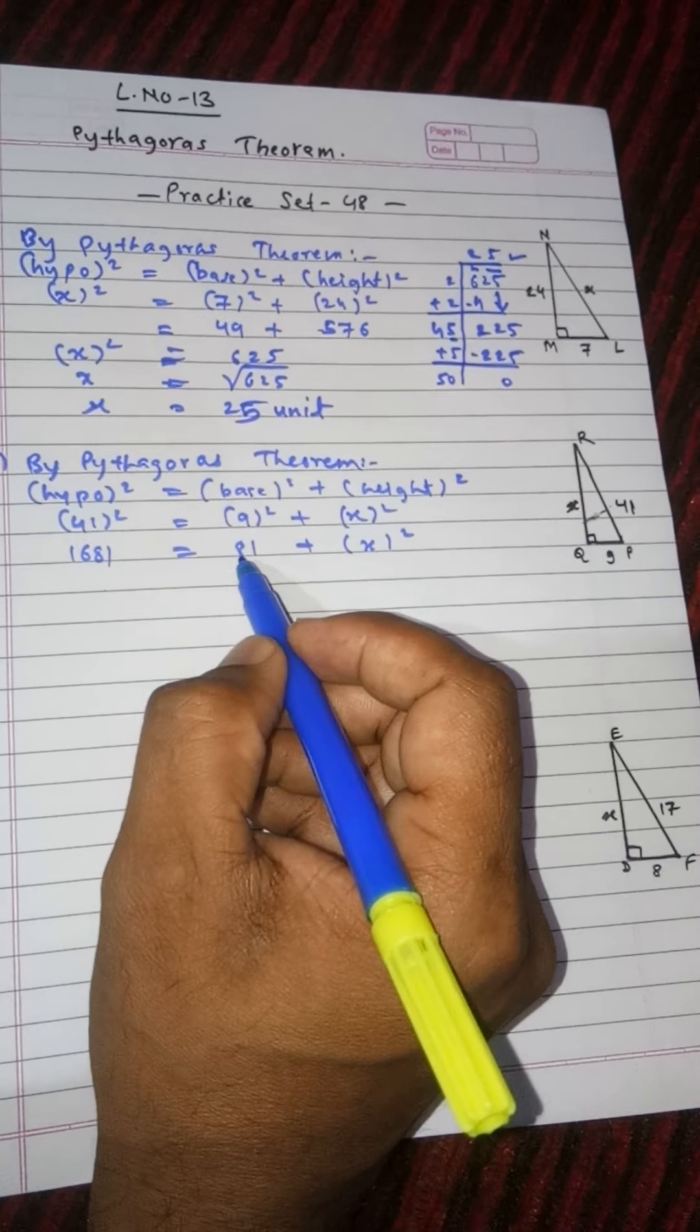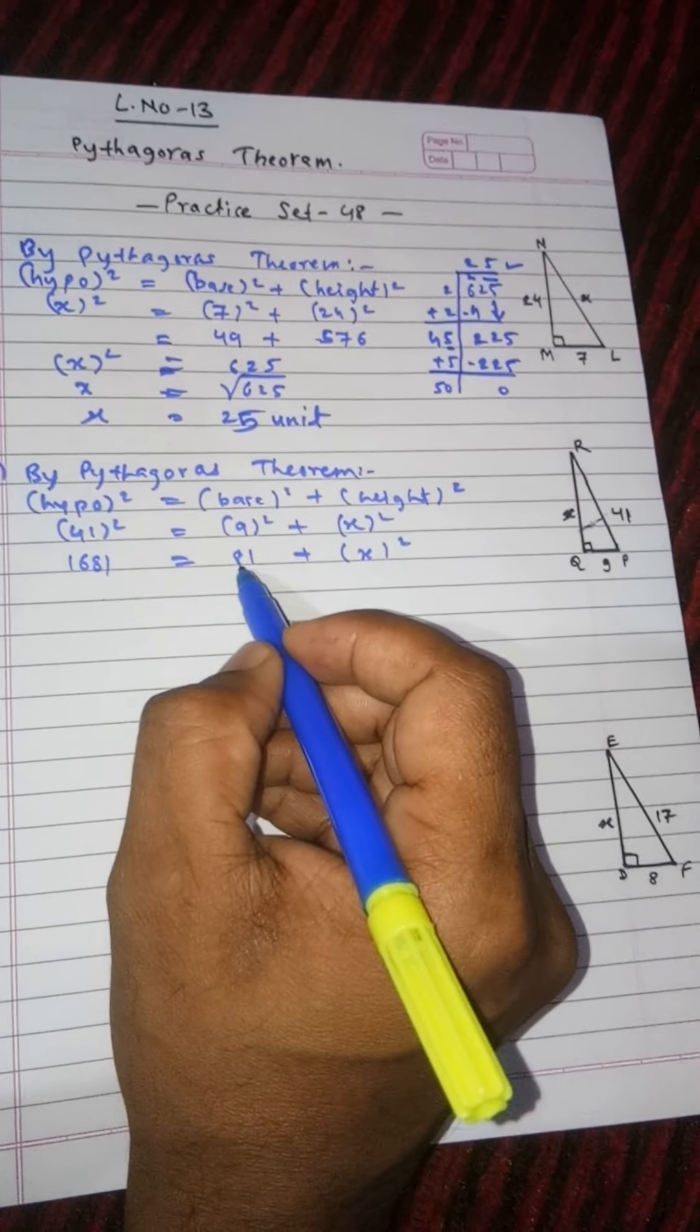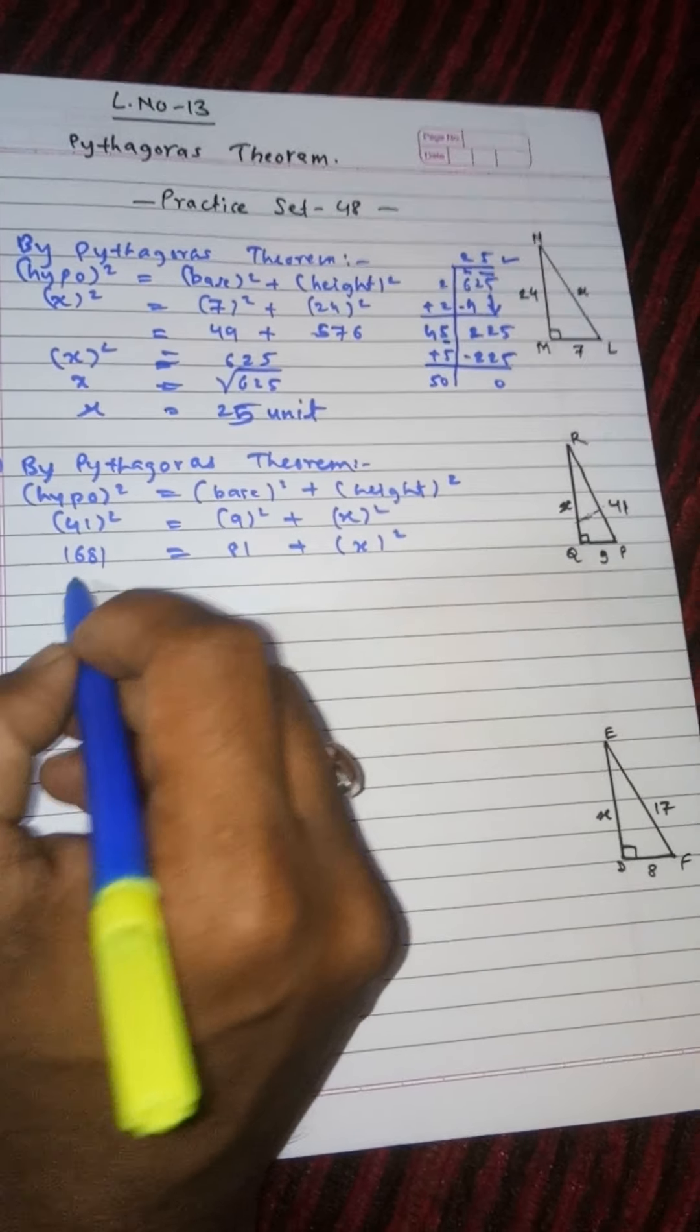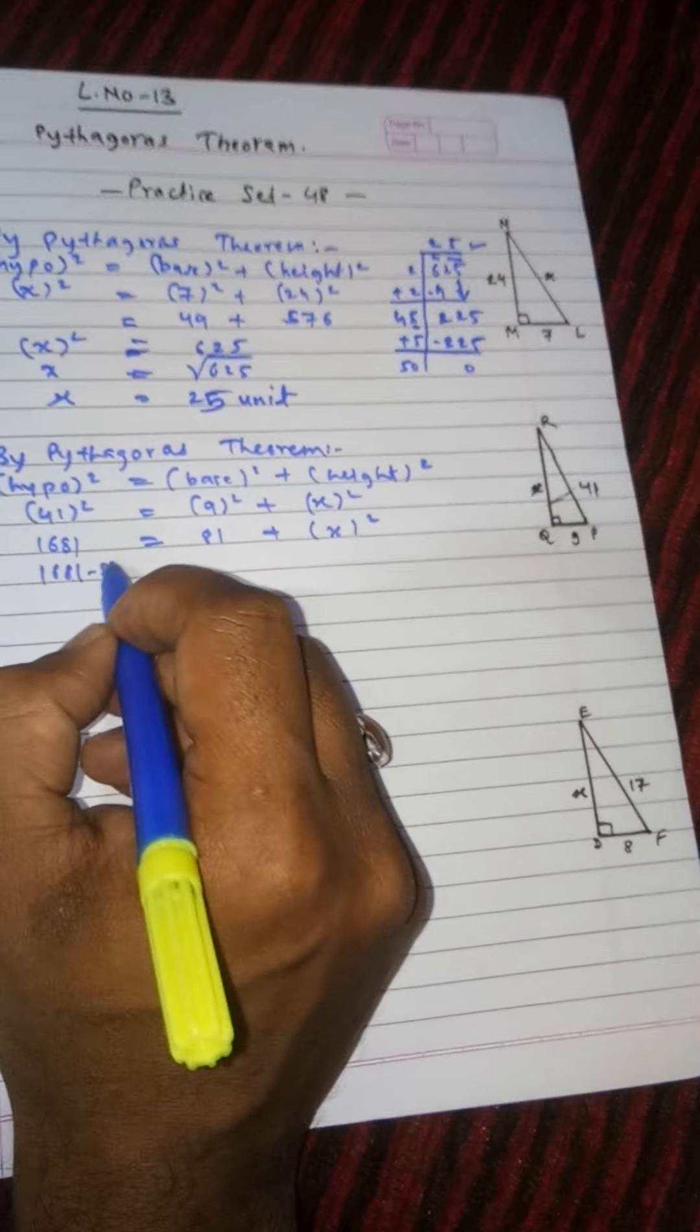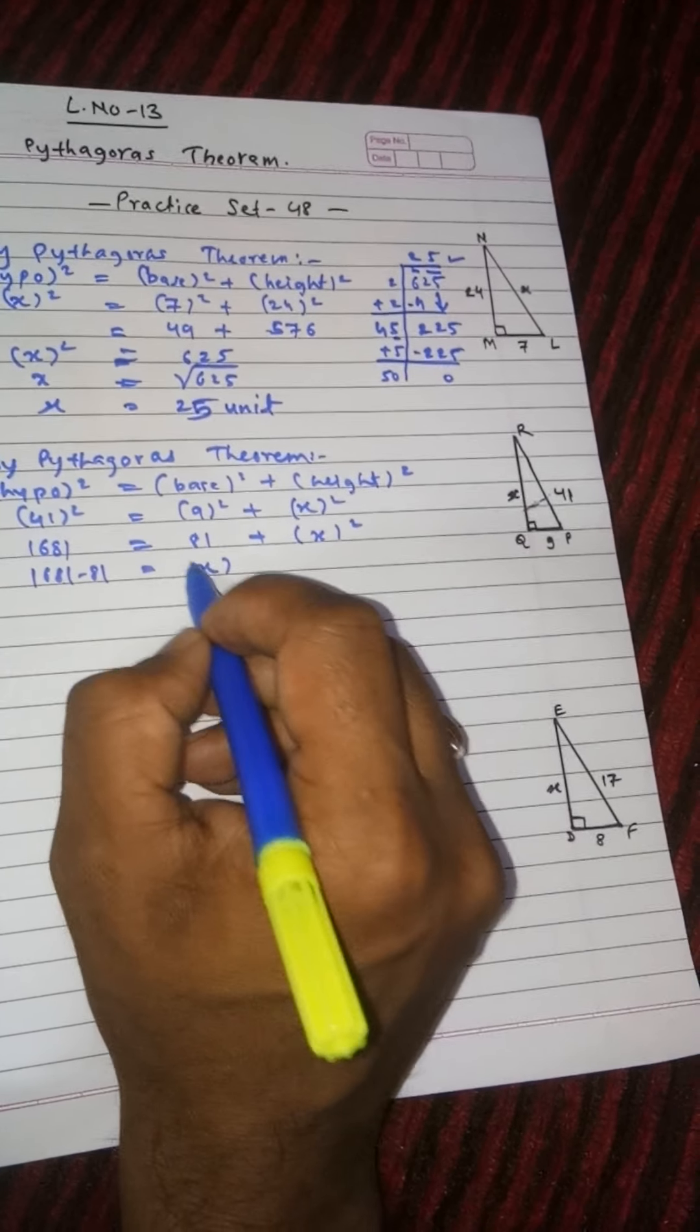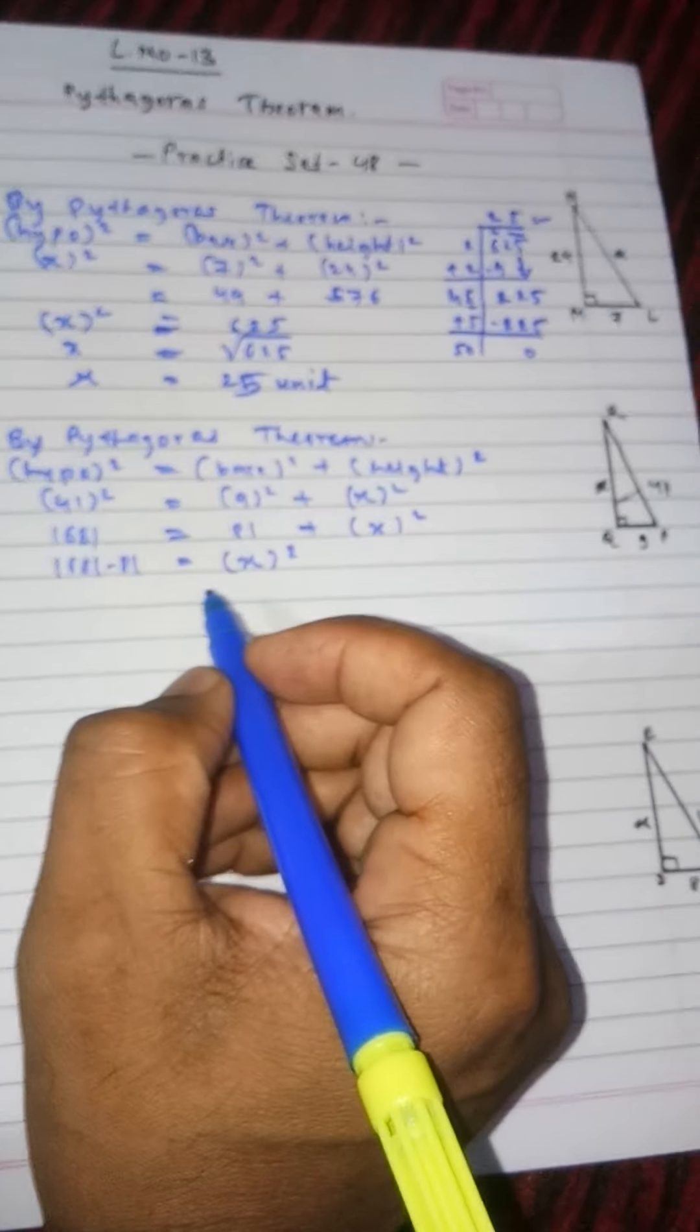1681 and 81 both are numbers, integers, so you will have to collect them. While collecting, operator will change. The operator of 81 is plus, addition, so here 1681 minus, plus has become minus, 81 is equals to x squared.